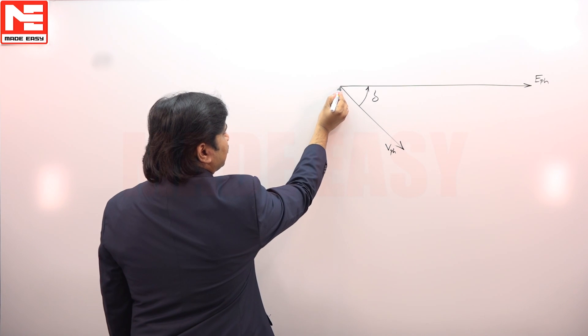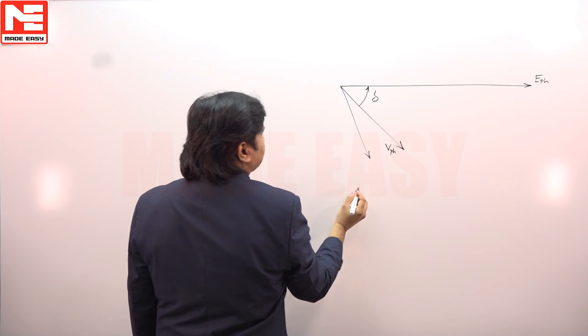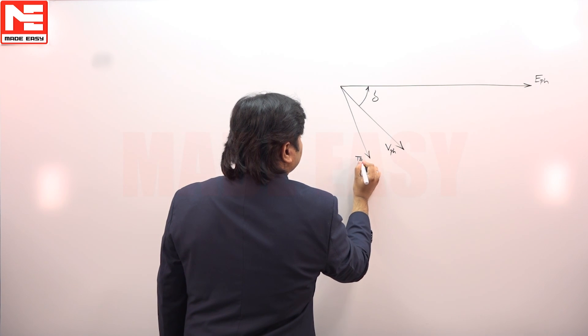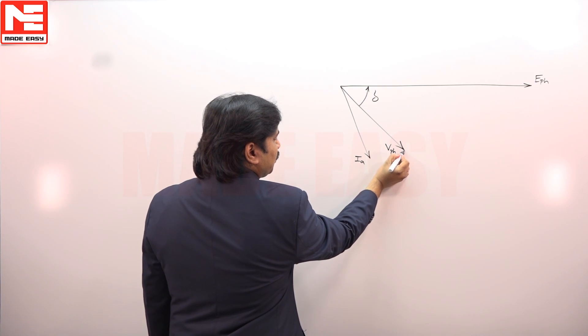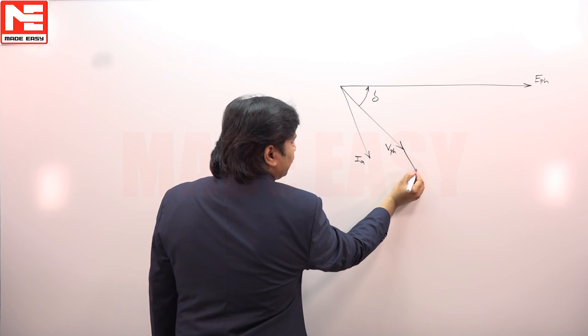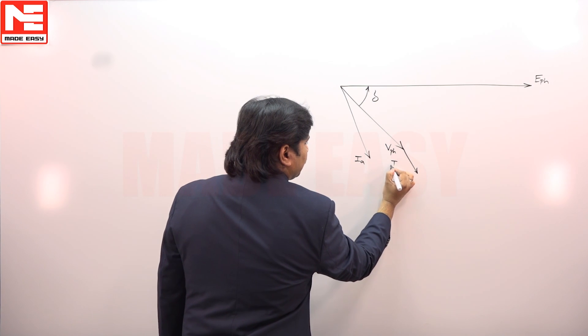So, let us say this is IA. Parallel to this there will be IA RA.